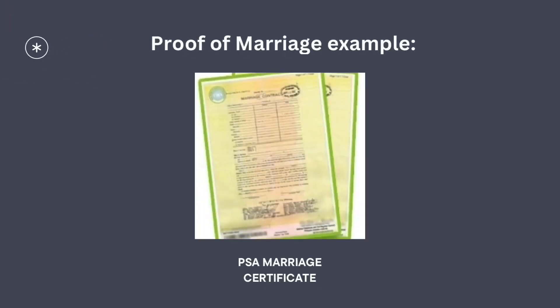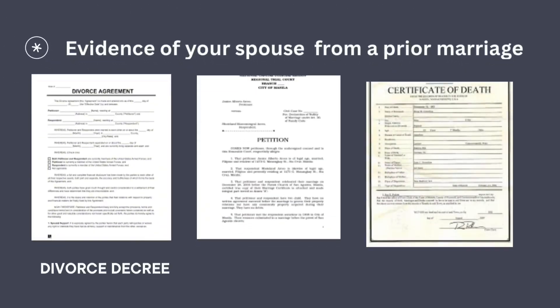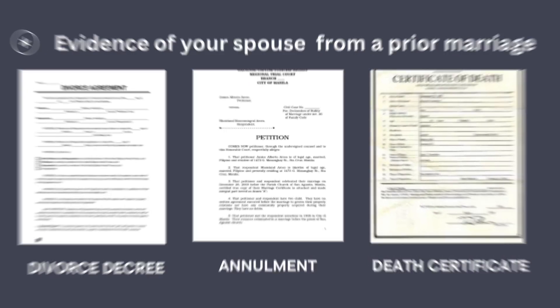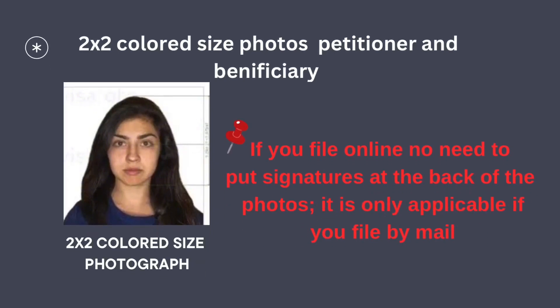Proof of marriage — for example, the marriage certificate or PSA marriage certificate. Evidence of your spouse's prior marriage if applicable, such as divorce decree, annulment, or death certificate. Two-by-two photos of the petitioner and the beneficiary; must be a recent colored photograph. If you filed online, you don't need a signature on the back of your photos, but if you filed by mail, you must write your signature on the back.